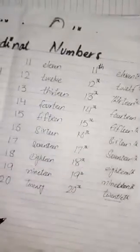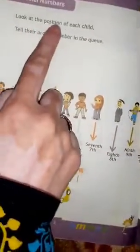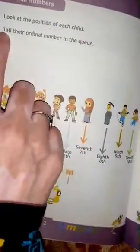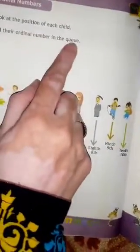Now come to your book, page number 2. Look at here: look at the position of each child. As I told you that ordinal numbers are those numbers which show us position. Tell their ordinal numbers in the queue.